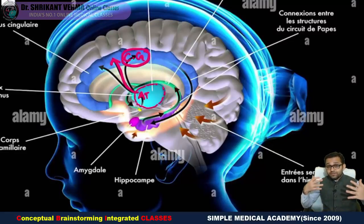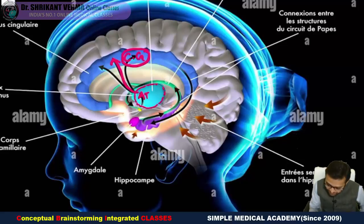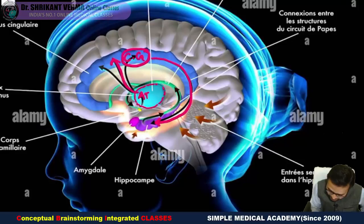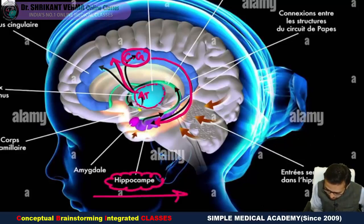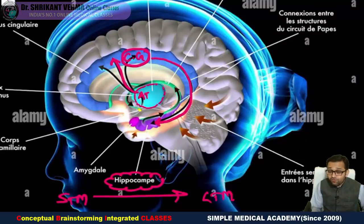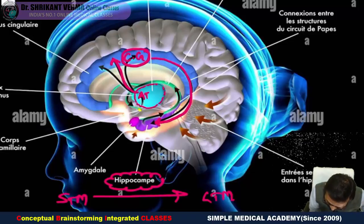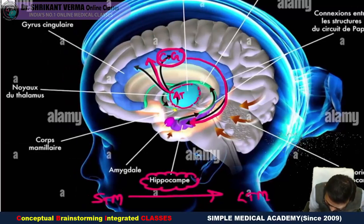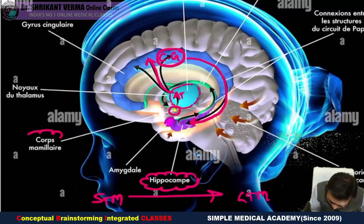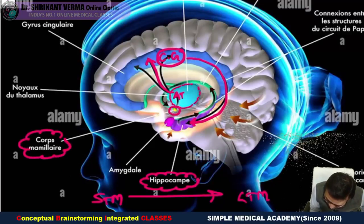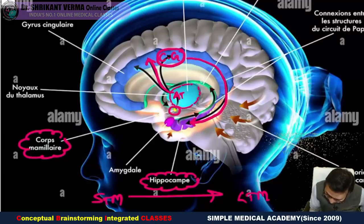The cingulate gyrus is the pleasure zone — Khushi ka Kendra — the satisfaction zone. Now from the cingulate gyrus, the impulse will go to the hippocampus. The hippocampus is the site for the conversion of short-term memory into long-term memory. And now from this hippocampus, the impulse will reach to the mammillary body, which is shown here as the corpus mammillary.